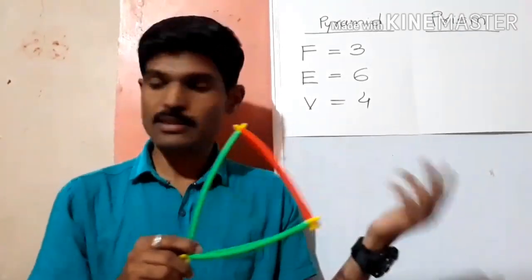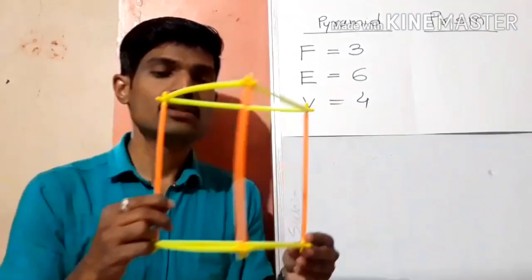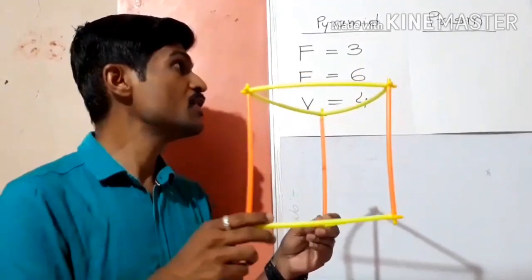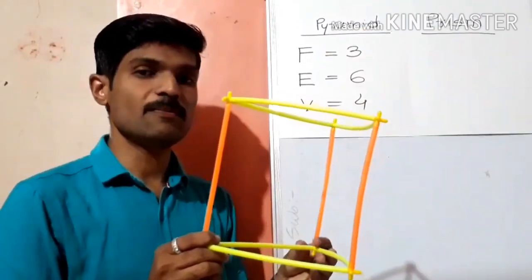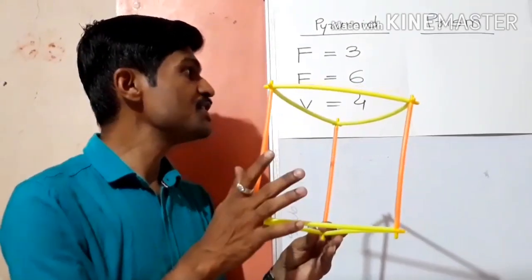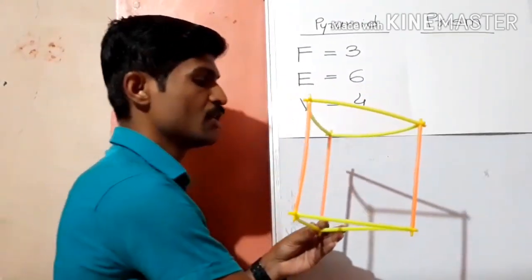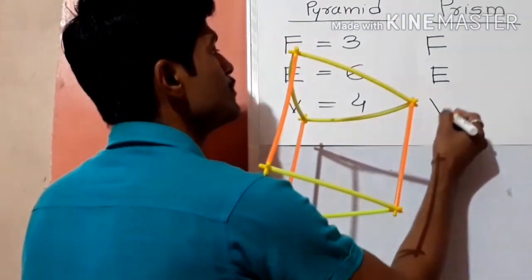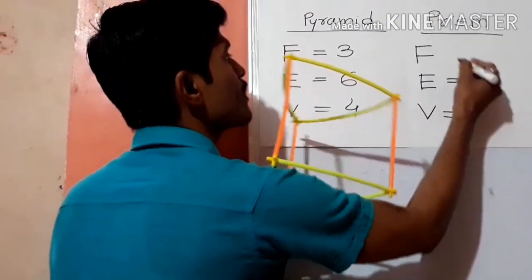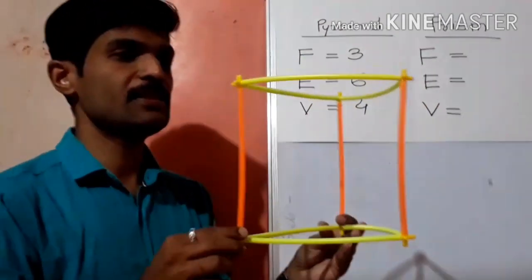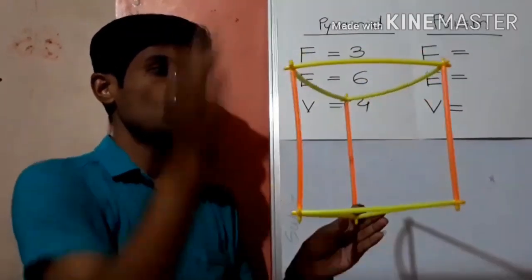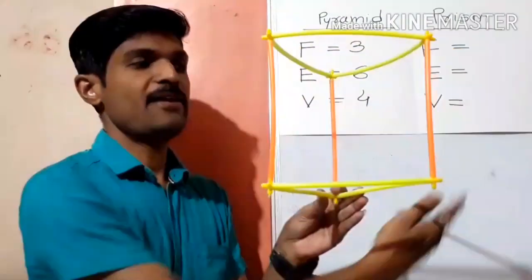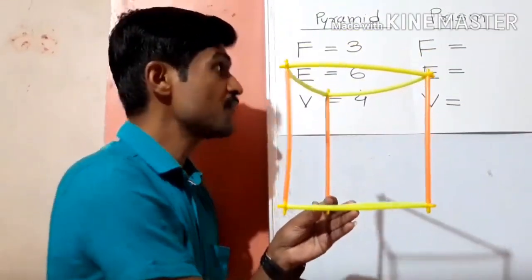Let's see another example — this is the triangular prism. The previous one was a pyramid, but now a prism. Let's see how many faces, edges and vertices. Counting the faces: one, two, three, four and five — so there are five faces.